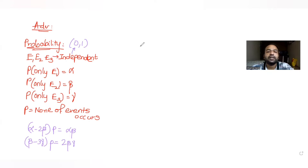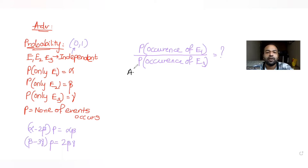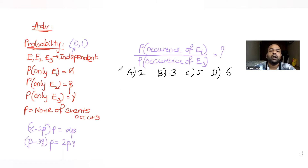We have been asked for the ratio of the probability of occurrence of E1 to the probability of occurrence of E3. We have been given four options: A is 2, B is 3, C is 5, D is 6. We need to figure out which one of the four options is the correct ratio.